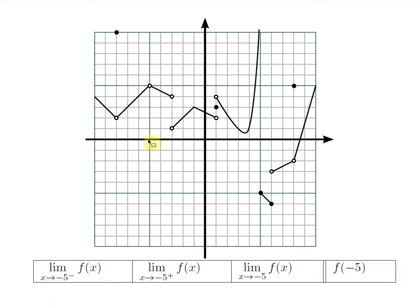The next x-value is negative 5. Moving from the left, you get a y-value of 5. Moving from the right, you'd also guess a y-value of 5. Covering with a ribbon and using both sides, you'd guess 5 as the two-sided limit. But what is the actual y-value? Along here there's no solid point — there's only a hole — so f of negative 5 actually does not exist. You can have the limits be a number while the function value is not a number.